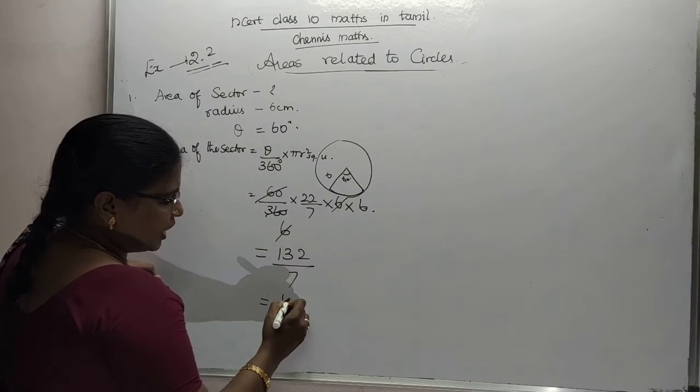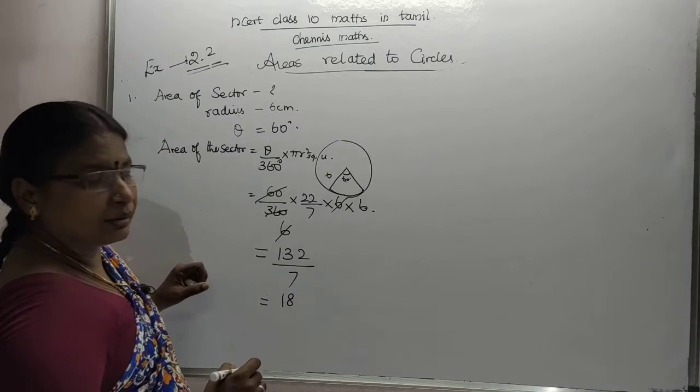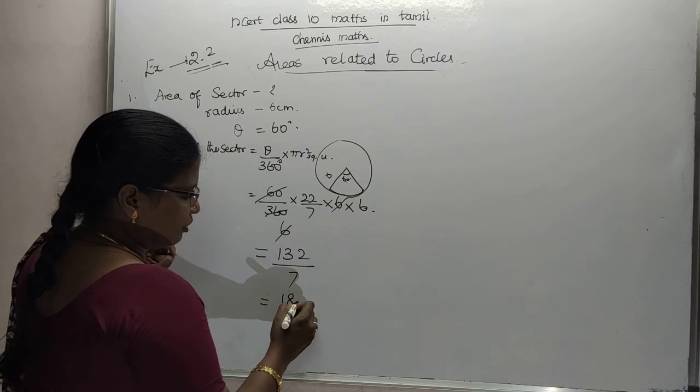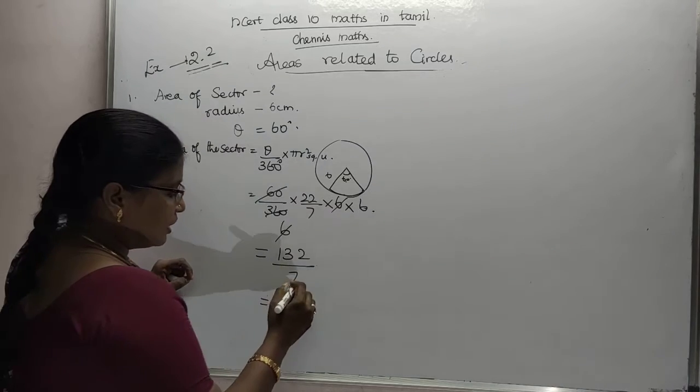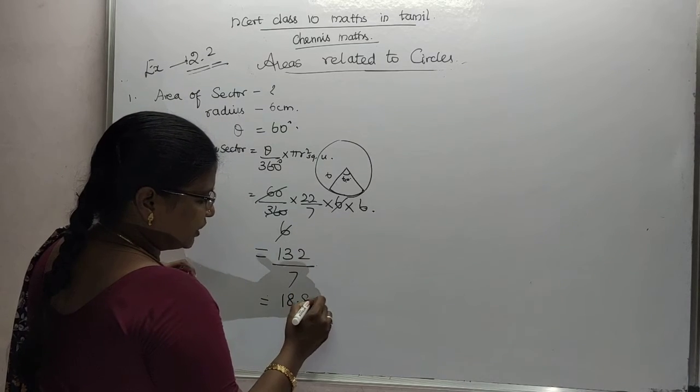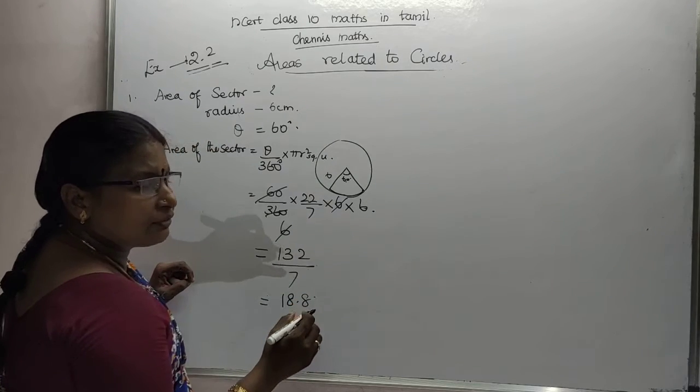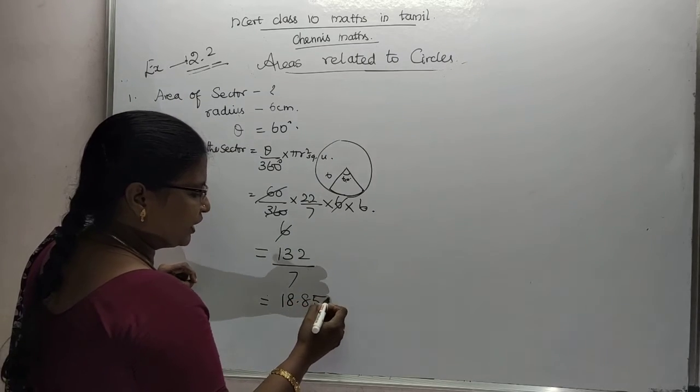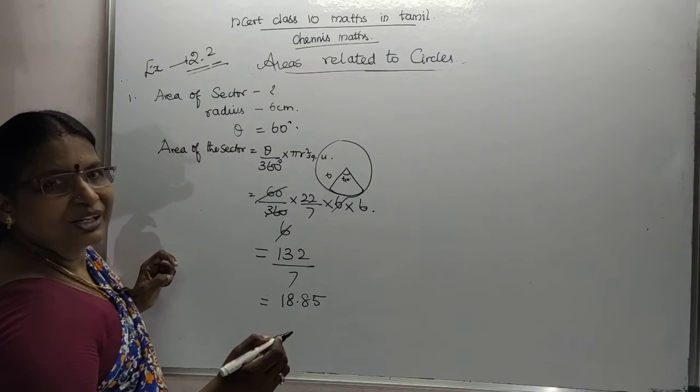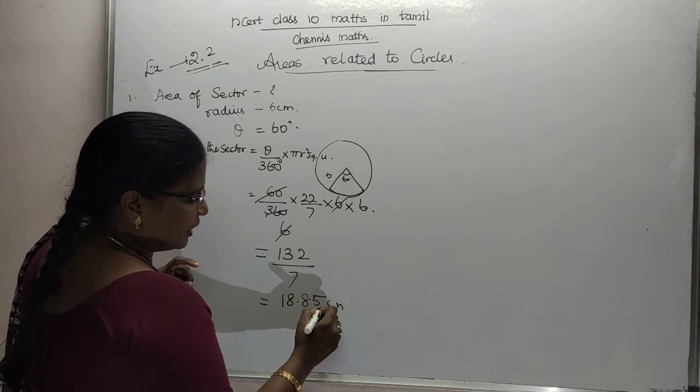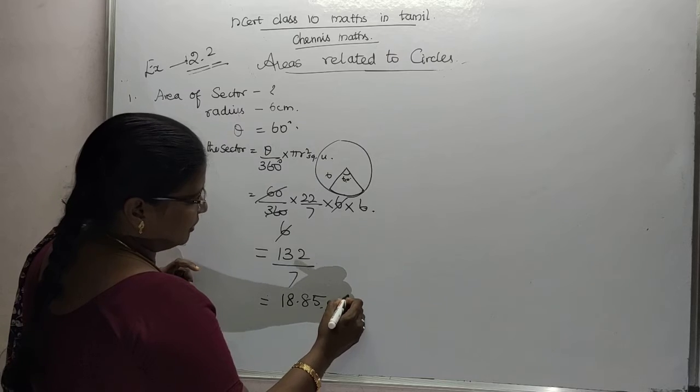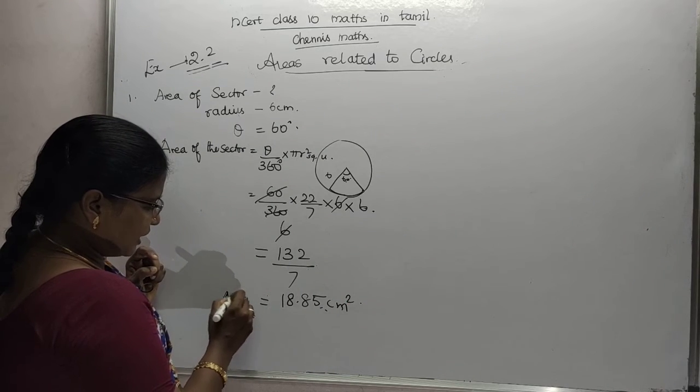22 by 7, so what is the answer? We will have 132 by 7. Therefore, it is centimeters squared. This is the area of the sector.